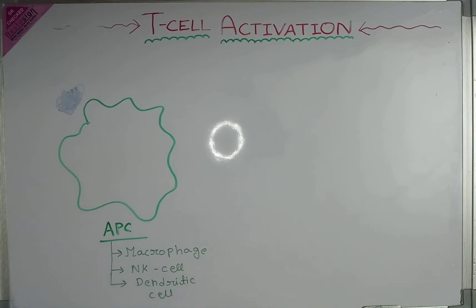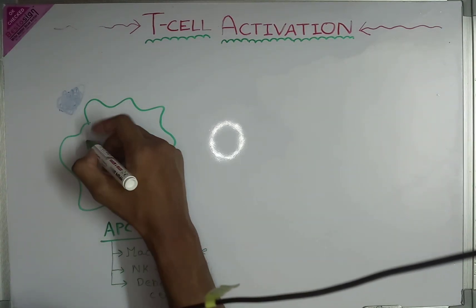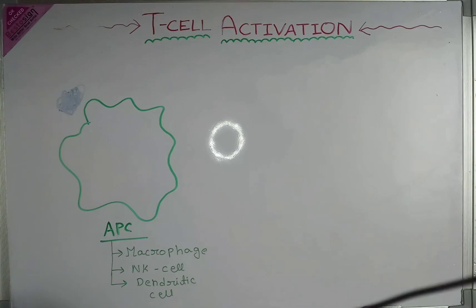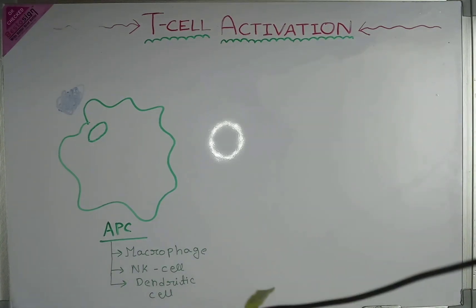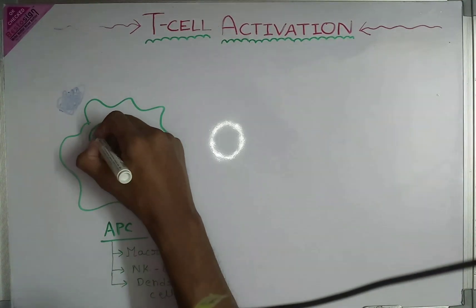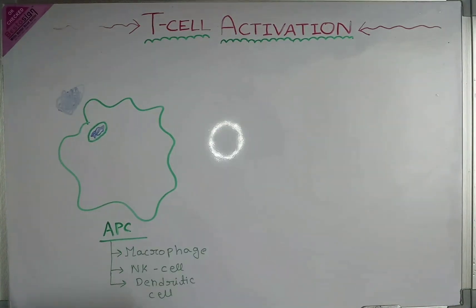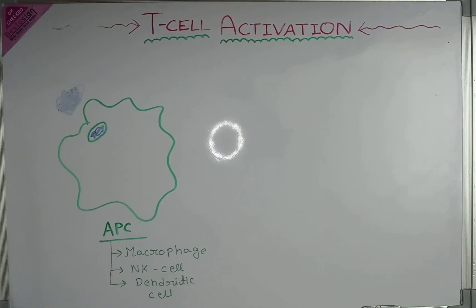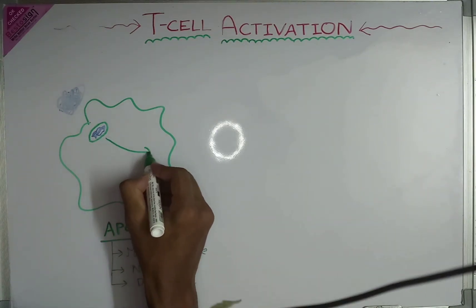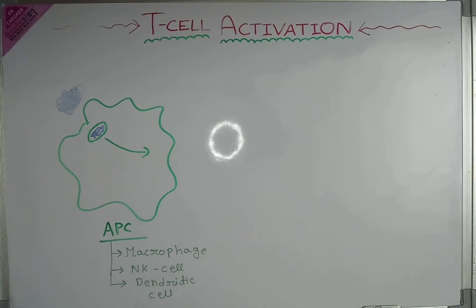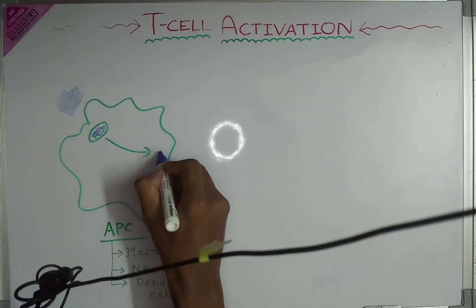First, the APC cell will engulf the foreign antigen through phagocytosis. The APC cell will then process this foreign particle using enzymes and convert it into small peptides.